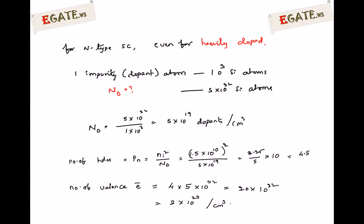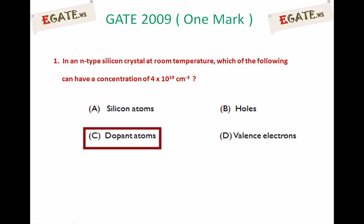Dopant atoms are in the range of 10¹⁹. So in an N-type silicon crystal at room temperature, dopant atoms can have a concentration of 4×10¹⁹ per centimeter cube. This is the right answer. Thank you.